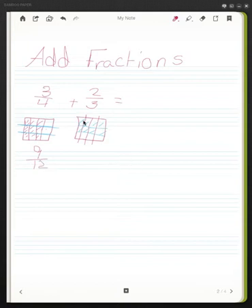This side, 2/3 is the same as 1, 2, 3, 4, 5, 6, 7, 8. So I have 8 out of 12 parts. So if I combine them all together, I have 1, 2, 3, 4, 5, 6, 7, 8, 9, 10, 11, 12, 13, 14, 15, 16, 17. So all together I have 17, and they are in twelfths.